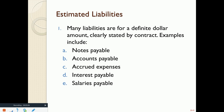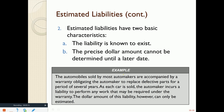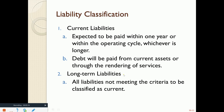Interest payable and salaries payable are examples of adjustments that we make at the end of an accounting period. Liability classifications come in two flavors: current liabilities are those expected to be paid back within one year of the balance sheet date, and long-term liabilities are those due greater than one year from the balance sheet date.